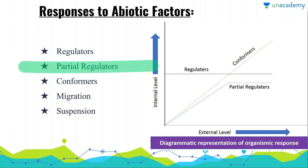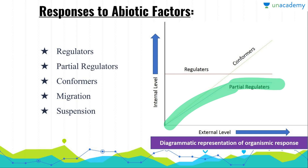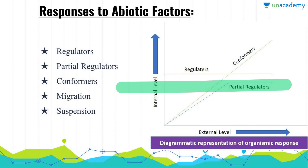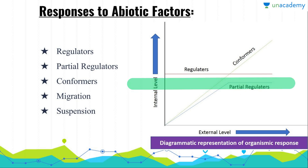In the case of a partial regulator, the organism changes its internal level according to the external environment up to a threshold limit, and after that it is not able to change its internal level any further. You can take some marine organisms in this category, because they can change their internal level in response to slight differences in salinity, but after a threshold limit they cannot adjust further and they suffer badly.